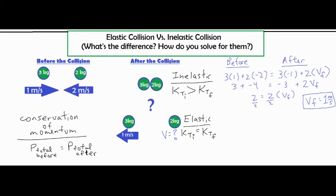When solving one of these problems, the first thing you want to do is draw a picture. You definitely want to draw a diagram similar to the before column and one similar to the after column. That way you can more easily identify where your negatives are going to come into play, since your masses won't be negative but your velocities may possibly be.